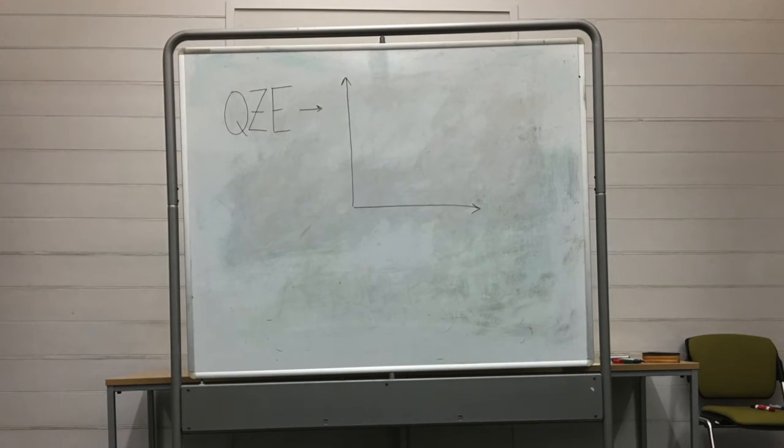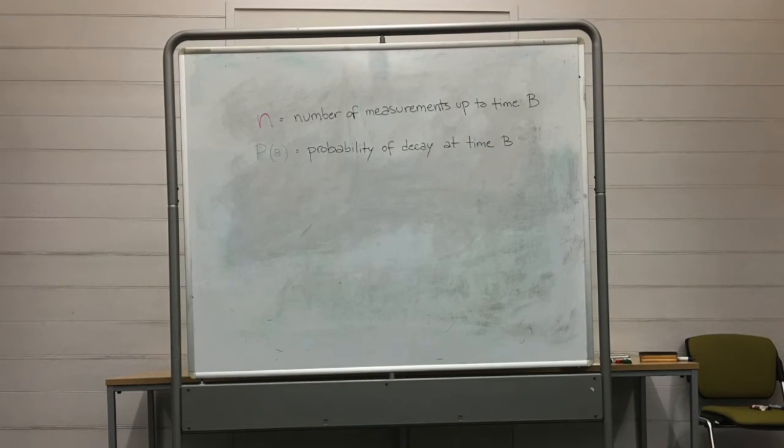The quantum Zeno effect can dramatically reduce the chance of a system changing states, simply by measuring it many times in a short amount of time, even though the probability of transition can never be brought to exactly zero. Therefore, the probability of the atom decaying at time B tends to zero as the number of measurements tends to infinity.